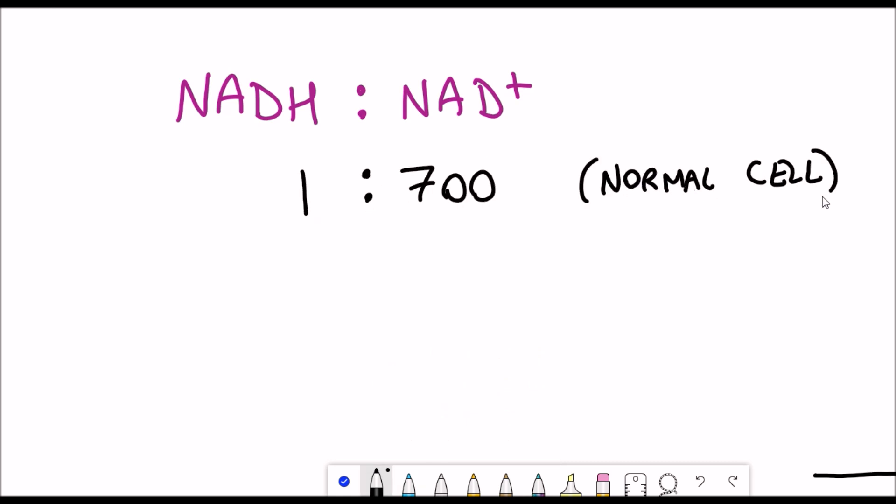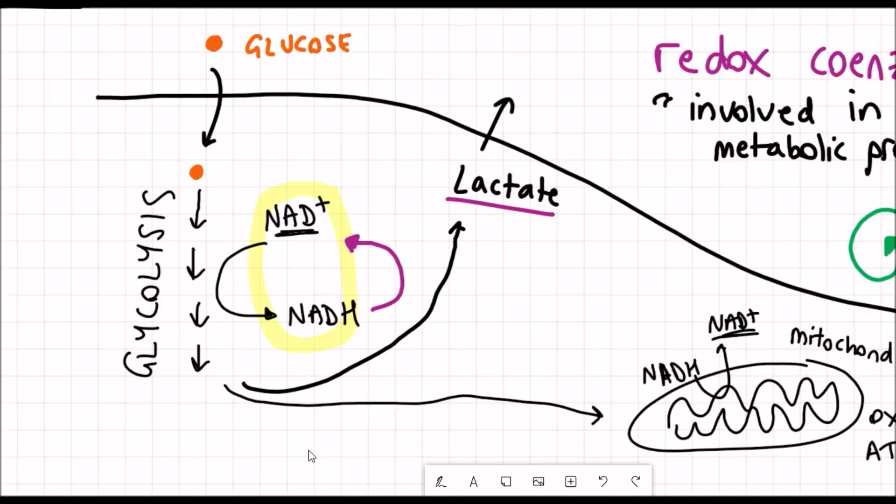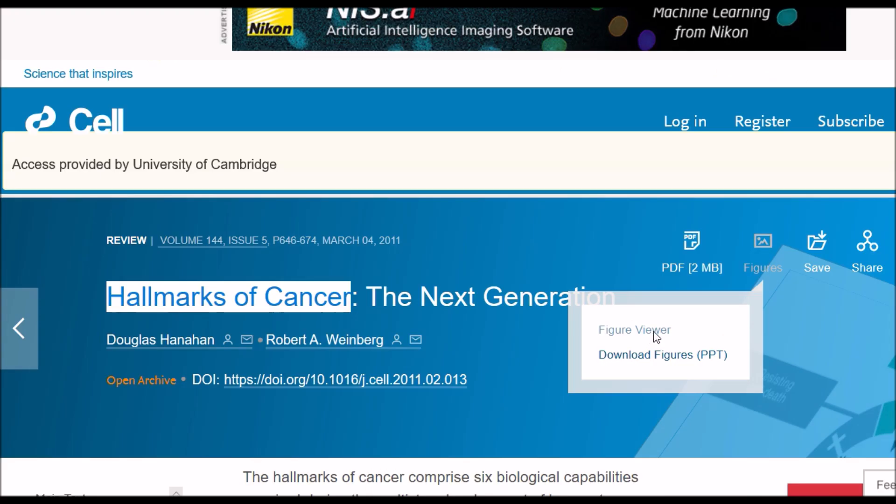In normal cells the ratio of NADH to NAD+ is around 1 to 700, however in cancer cells this ratio can get increased to around 3 to 700. An increase in NADH compared to NAD+ can be seen when there's an increased flux through glycolysis.